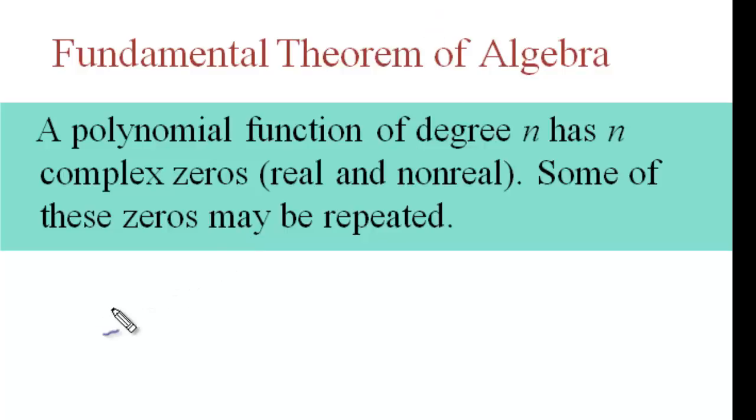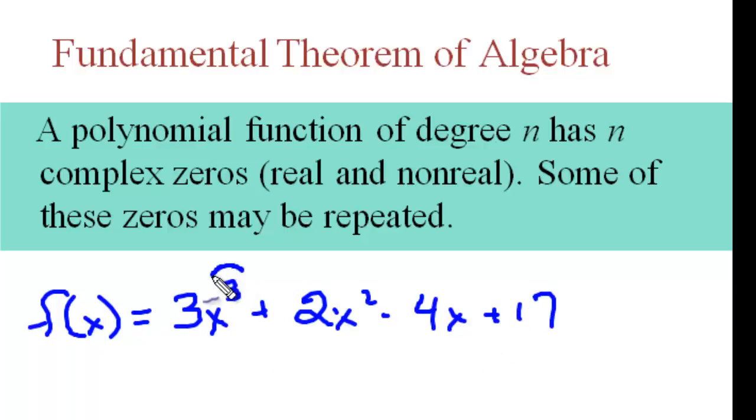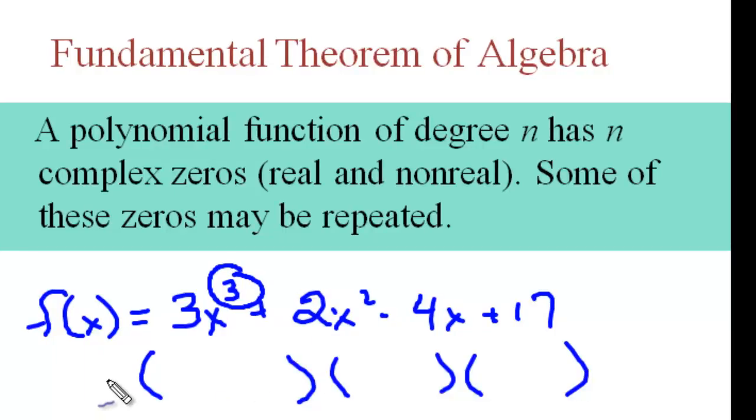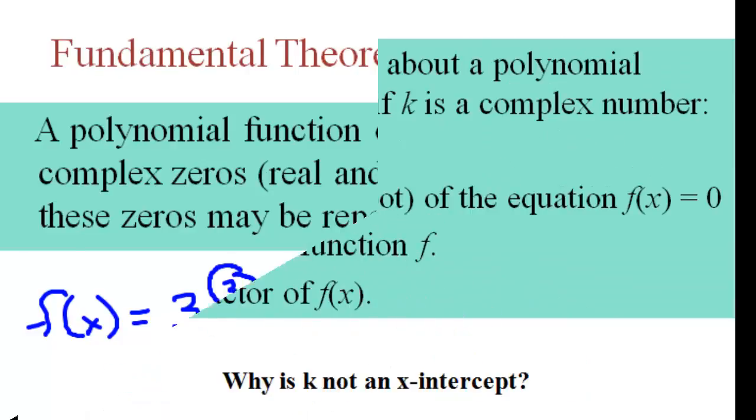Basically, what it means is if I have f(x) equals 3x cubed plus 2x squared minus 4x plus 17, this is my degree. It's a third degree. I will have three zeros, meaning I can factor it into three factors, and there may be a coefficient in front.